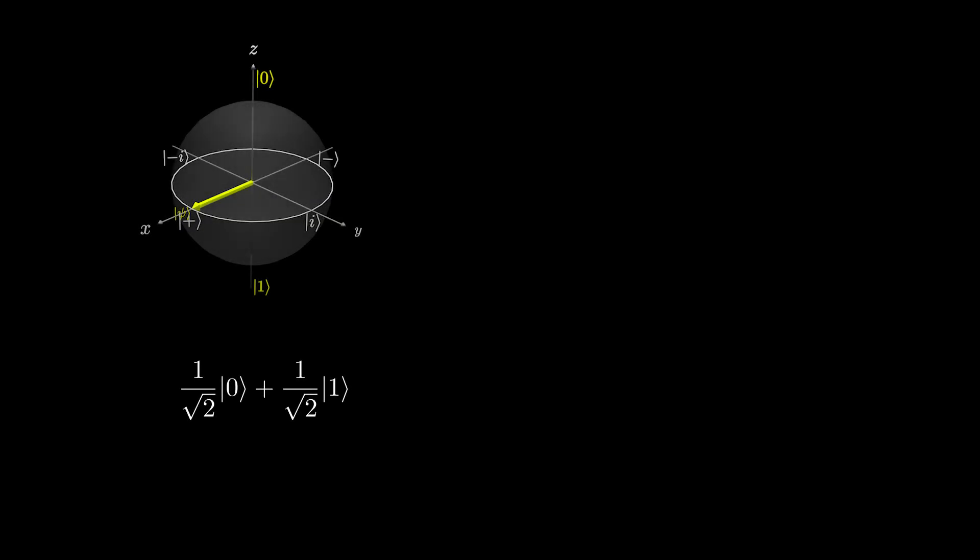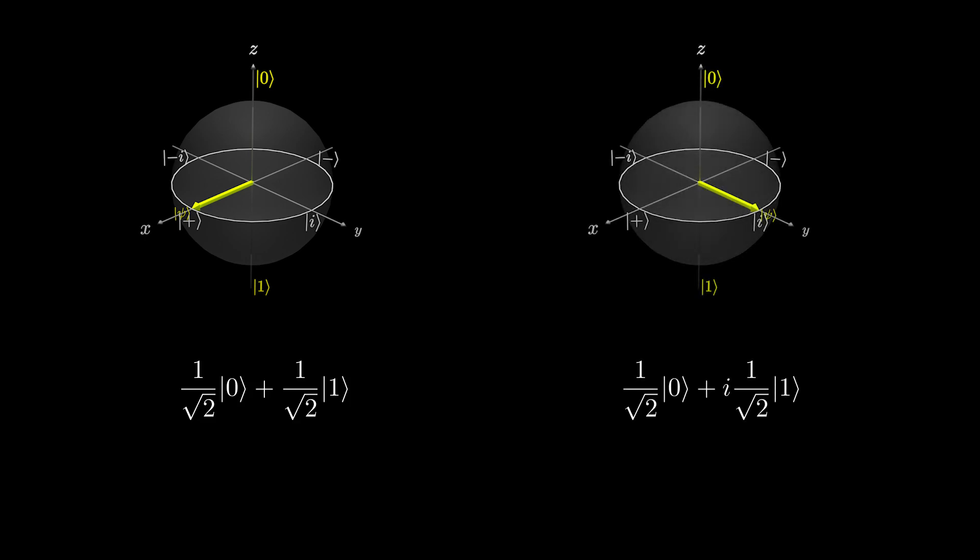Let's try another example. Let's plot the state 1/√2|0⟩ + 1/√2|1⟩ and 1/√2|0⟩ + i/√2|1⟩. If we represent i as a complex number in exponential form, we get e^(iπ/2). And if you look at the Bloch sphere, to get that state, we rotate π/2 radians around the z-axis.